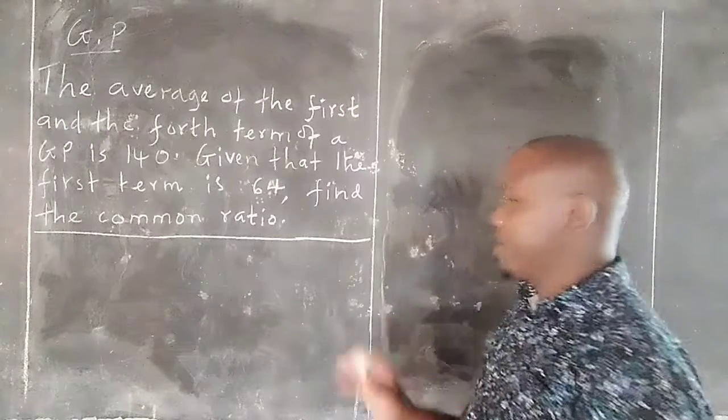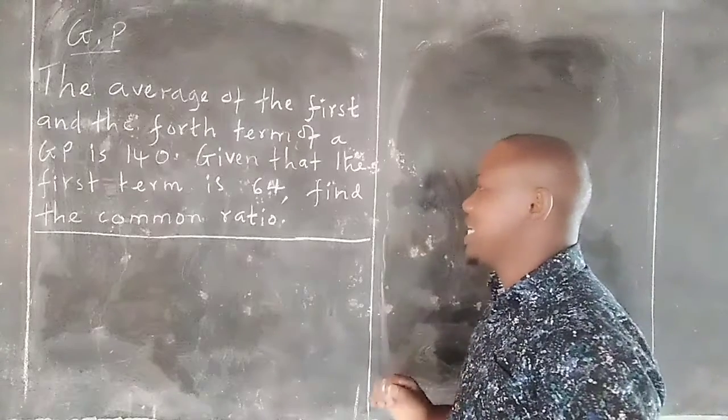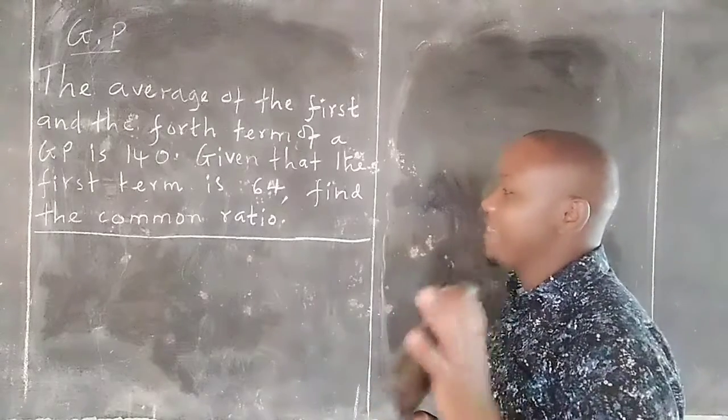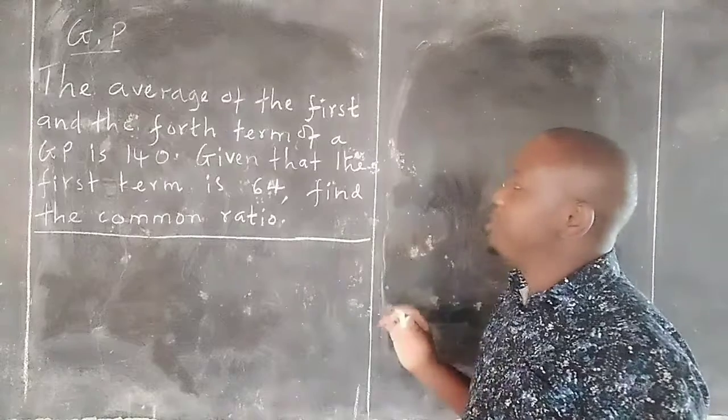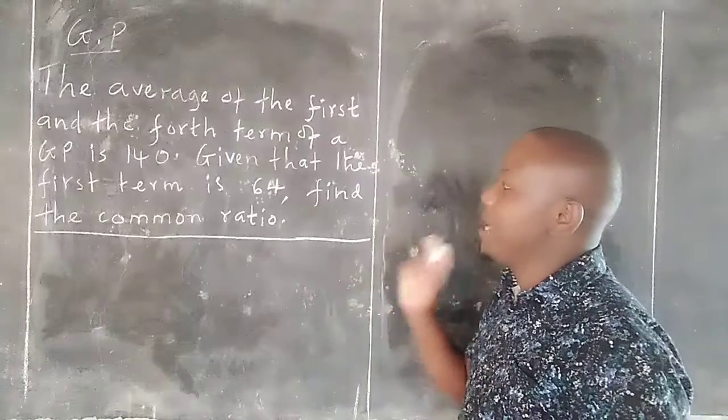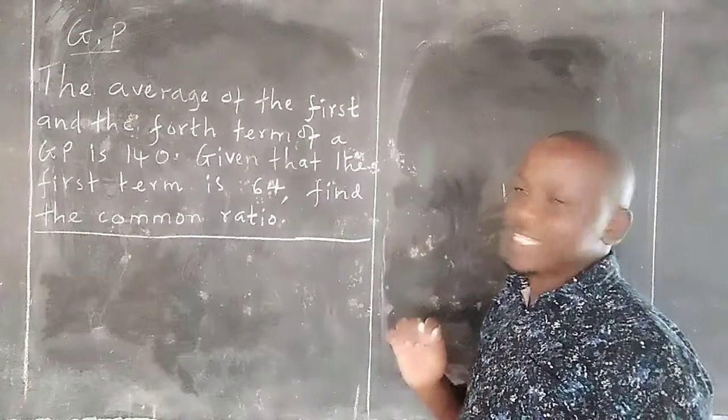Therefore the common ratio has not been given. We are given the first term is 64 and we are further told that the average of the first term and the fourth term gives us 140.